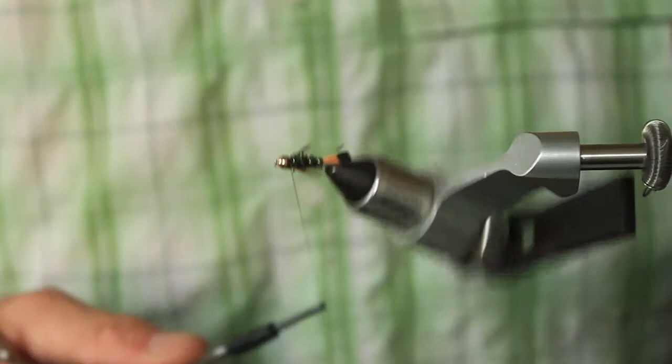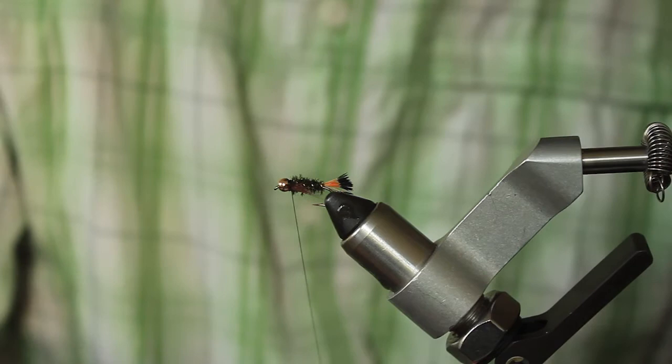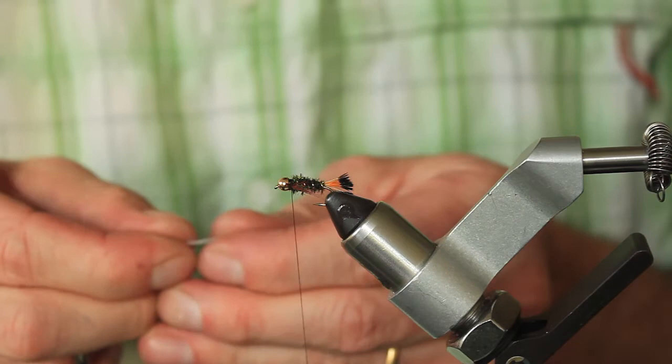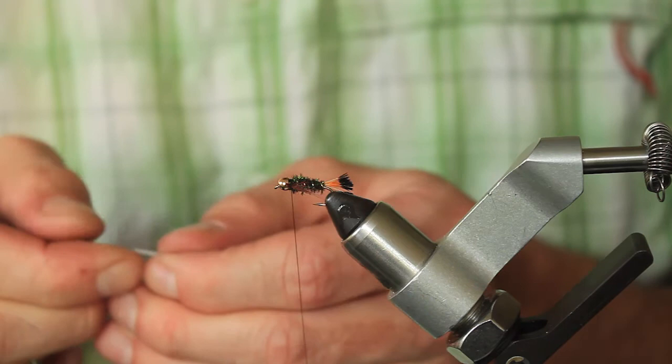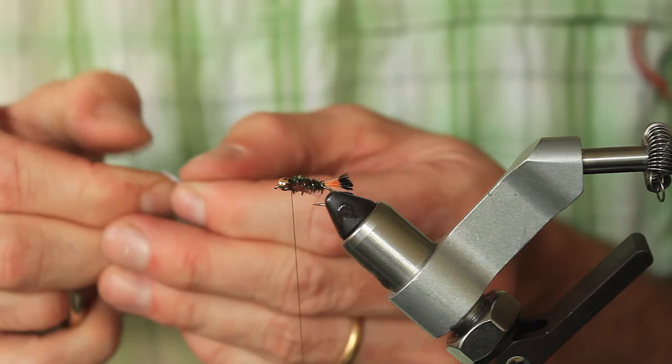And then the last step of your secret weapon is going to be adding two goose biots. These biots should be the length of one shank and should taper back over your entire body. You can add them one at a time or you can add them at the same time. Whichever method you choose, just make sure your materials are secured. I prefer to put both down at the same time for the sake of expedited tying.